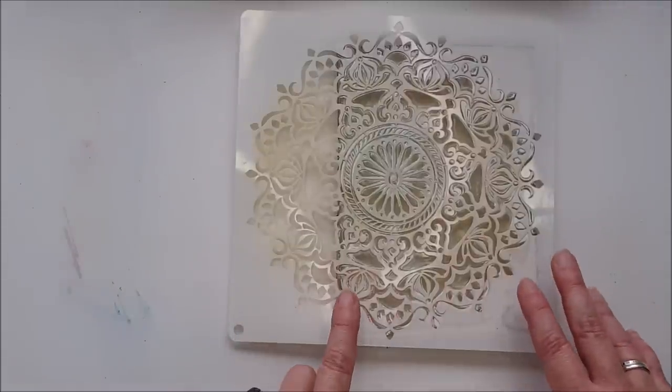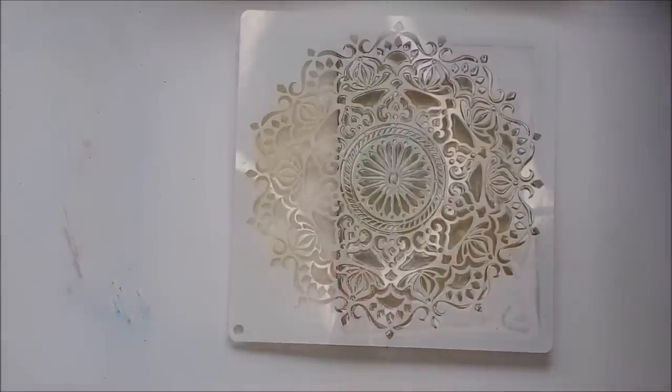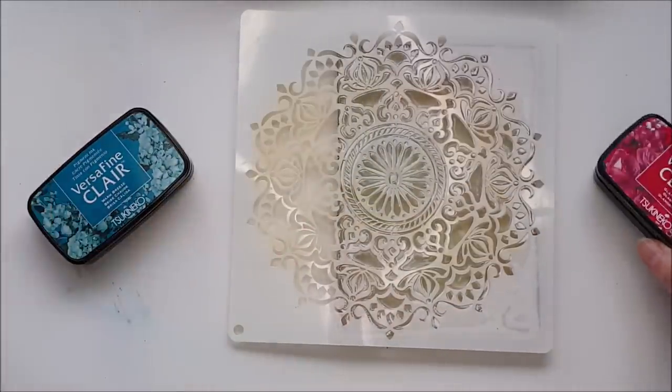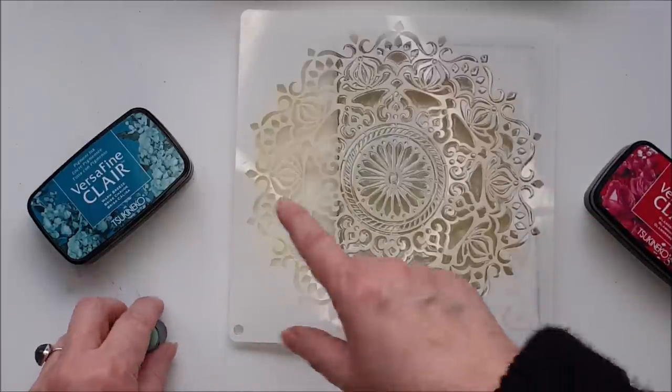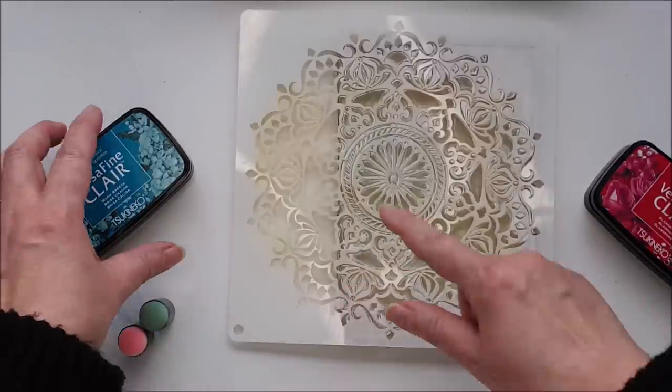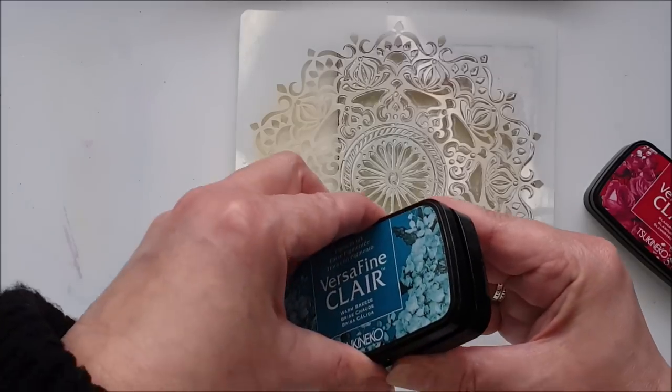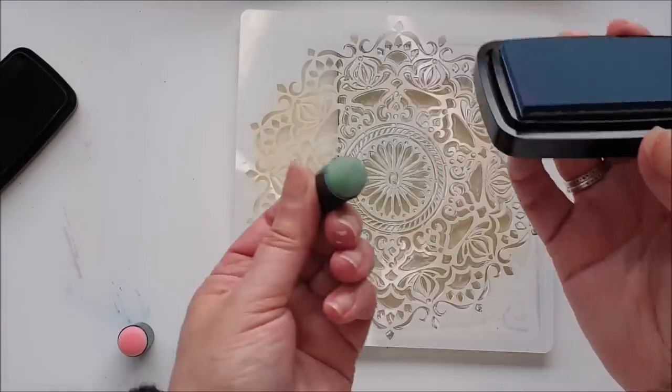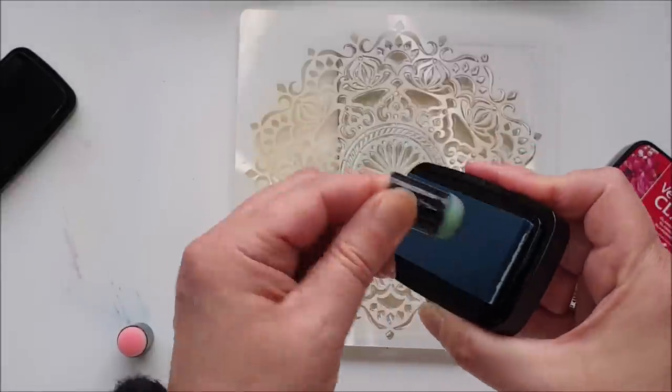And then leaving that stencil in place for now, I'm going to apply some ink. And I'm going to use Warm Breeze and Glamorous. And because I don't want to contaminate the ink pads with any residue of paint, I'm just going to use some sponge daubers here. These are the little finger daubers. You could use the Tim Holtz applicators.